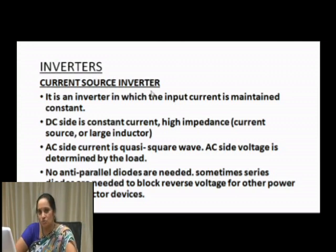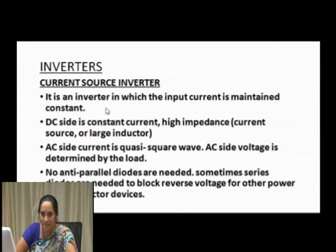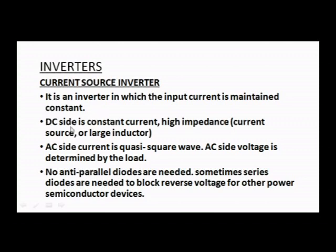The current source inverter (CSI), also called current fed inverter, maintains a constant input current. The DC side is a constant current source with high impedance, realized as a current source or an inductor. An inductor is used because it prevents instantaneous change in current, thereby maintaining the constant current needed.